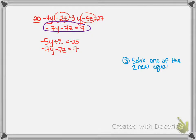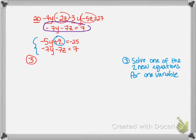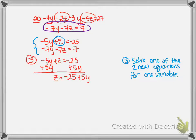Step 3: we are now going to solve one of these two new equations for one of the variables. Again, certain choices are easier. The first equation has z with no coefficient, so it will be easier to solve for z. Starting with negative 5y plus z equals negative 25, I add 5y to both sides and get z equals negative 25 plus 5y.